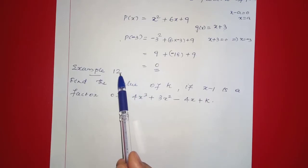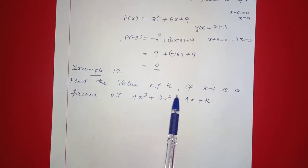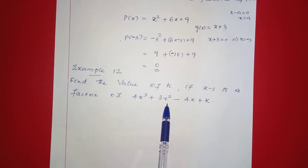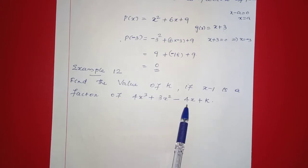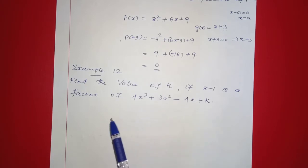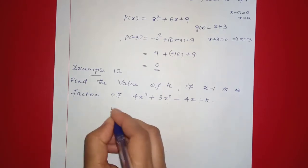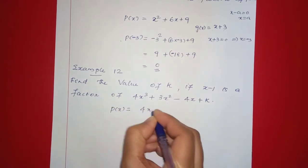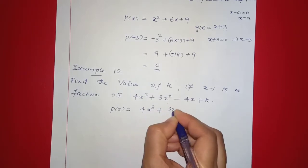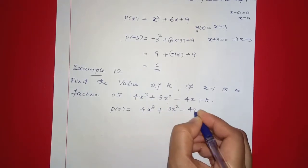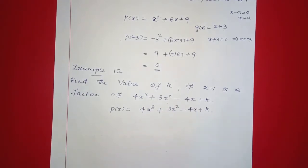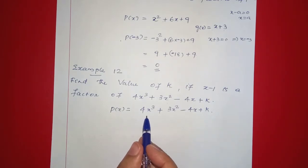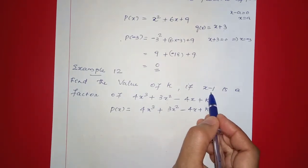Example: Find the value of k if x minus 1 is a factor of 4x cubed plus 3x squared minus 4x plus k. We write P(x) equal to 4x cubed plus 3x squared minus 4x plus k. Since x minus 1 is a factor, by the factor theorem, x minus 1 equals 0, which means x equals 1.